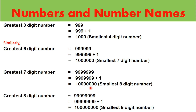The smallest 8-digit number is 1 crore. Similarly, the greatest 8-digit number is 9 crore 99,99,999. If we add 1 to this greatest 8-digit number we get the smallest 9-digit number, that is 10 crore.